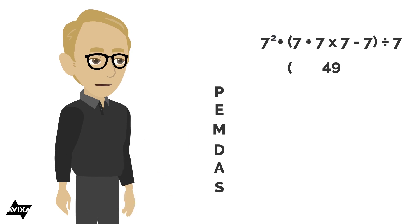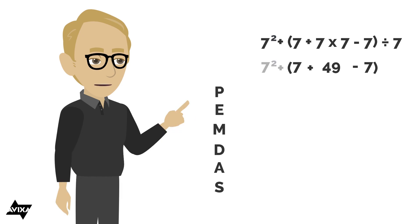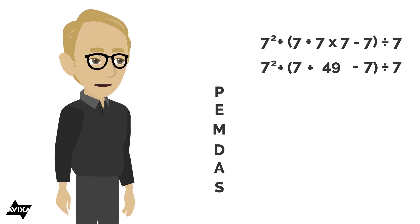So within the parentheses here, seven plus 49 minus seven, and I'm going to put the rest of it out here, and we'll do this step by step. I'm still within the parentheses, and this is addition and subtraction, so I'm going to do these left to right. Seven plus 49 is going to be 56 minus seven,